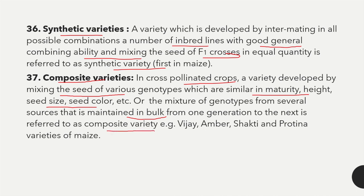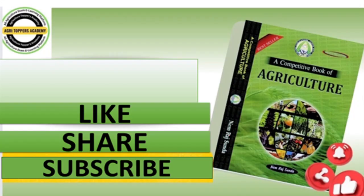Examples of composite varieties are Vijay, Ambar, and Shakti — varieties of maize. This is all about plant breeding and genetics. Next lecture mein hum plant physiology start karenge. Thanks for watching and don't forget to like, subscribe, and share.